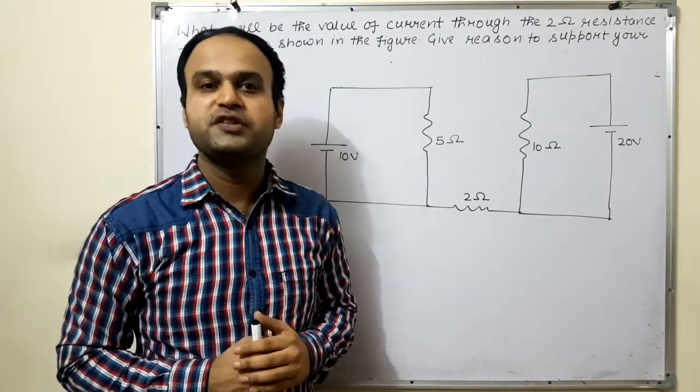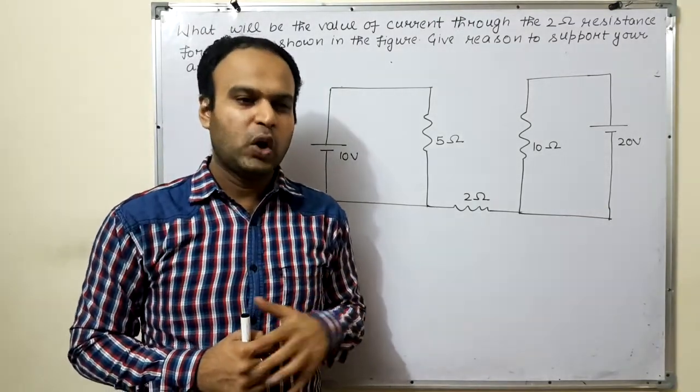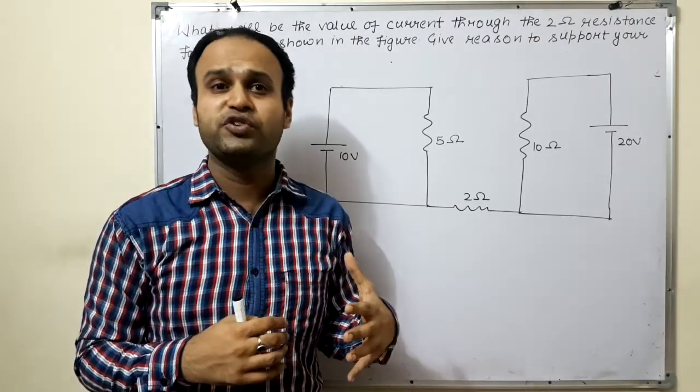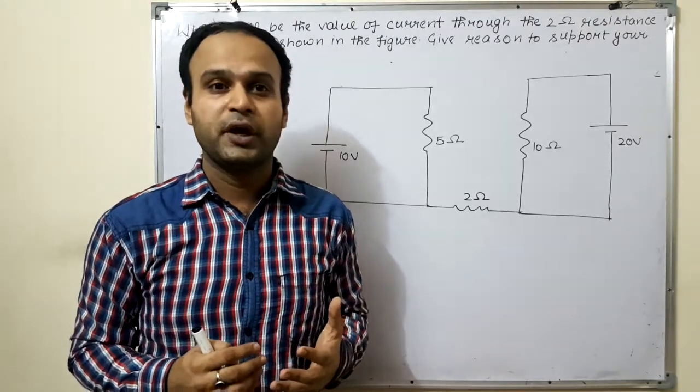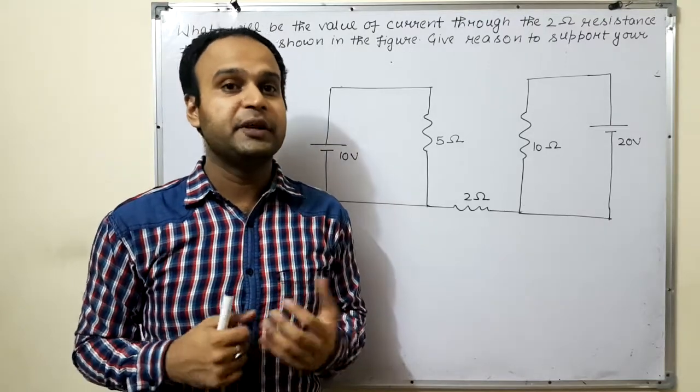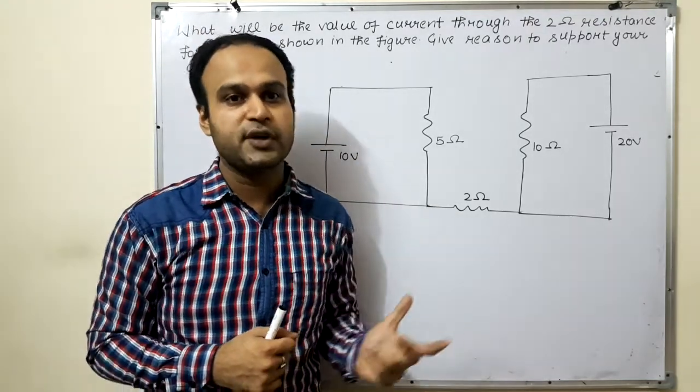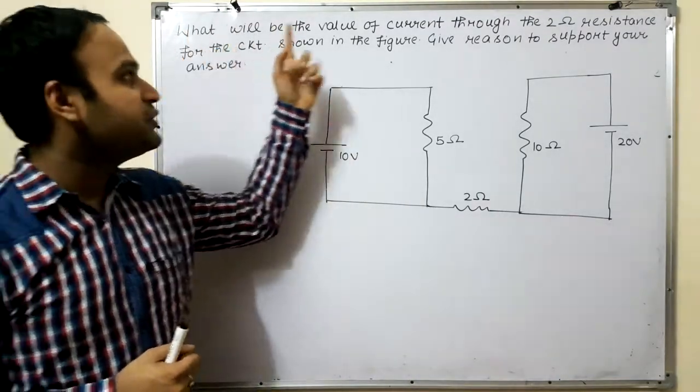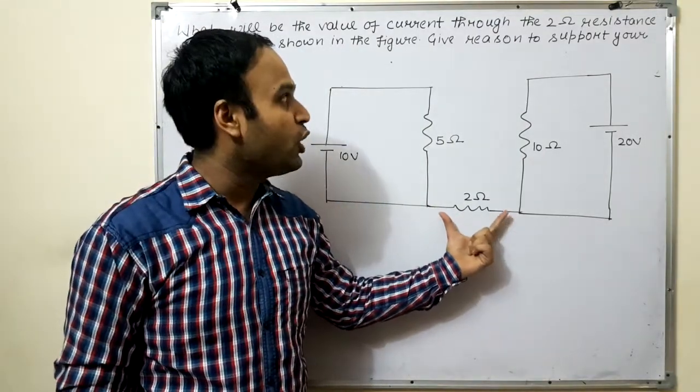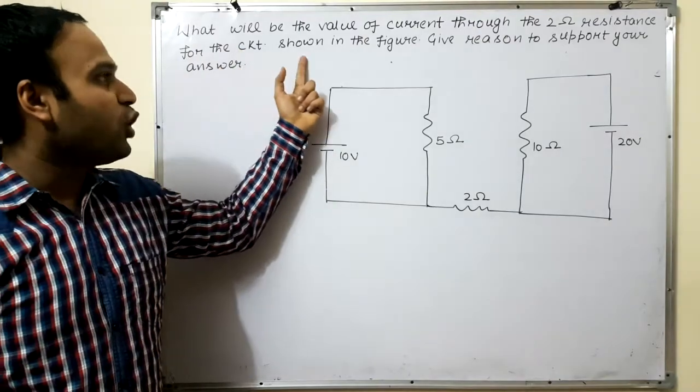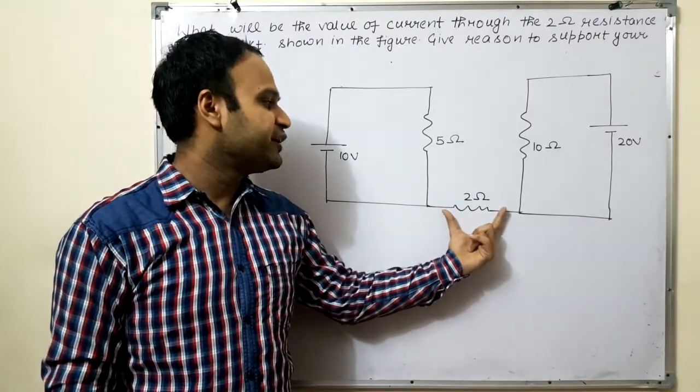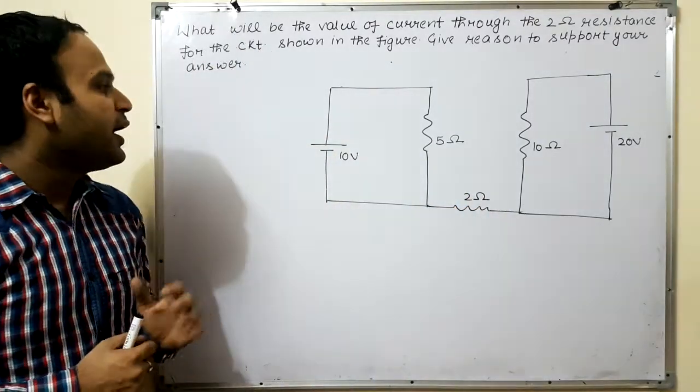Now students, the question I'm discussing is basically an important question. You know some questions have shortcuts that can be used and can be solved quickly. But we should know the concept clearly. If I solve it concept-wise, then it will be easy. Though it looks complicated, otherwise it is easy. Just for example, let me discuss this question. What will be the value of current through the two ohm resistance? You have to find out the current through the two ohm resistance for the circuit shown in the figure. Give reason to support your answer.